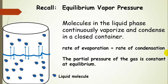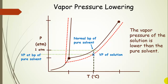Let's remind ourselves of equilibrium vapor pressure. Molecules in the liquid phase are continuously vaporizing and condensing. In a closed container, this vapor pressure is constant in time once we reach equilibrium. Let's use the phase diagram to rationalize vapor pressure lowering. Here's one atmosphere, and here is our normal boiling point. At that boiling point, the vapor pressure is equal to the external pressure — so one atmosphere is the vapor pressure of that pure solvent.